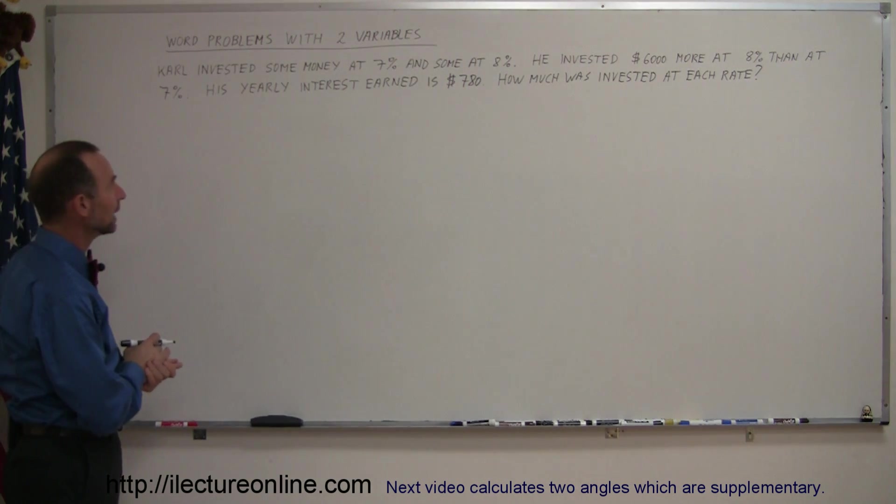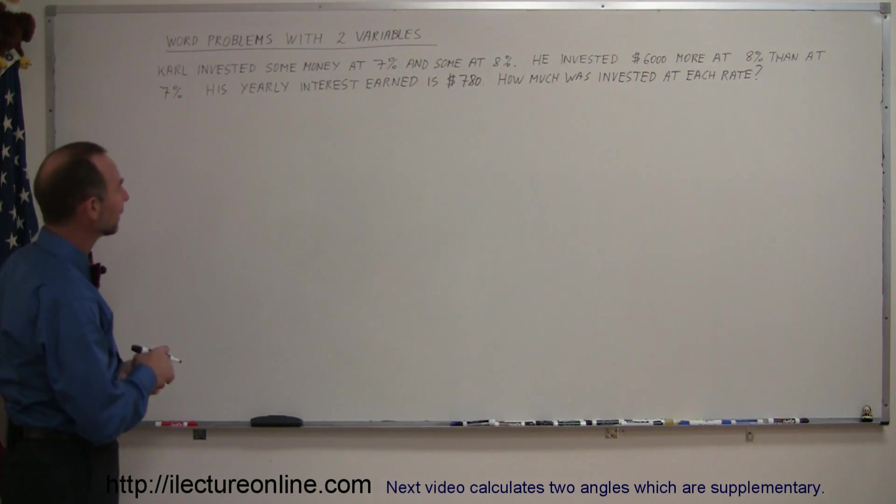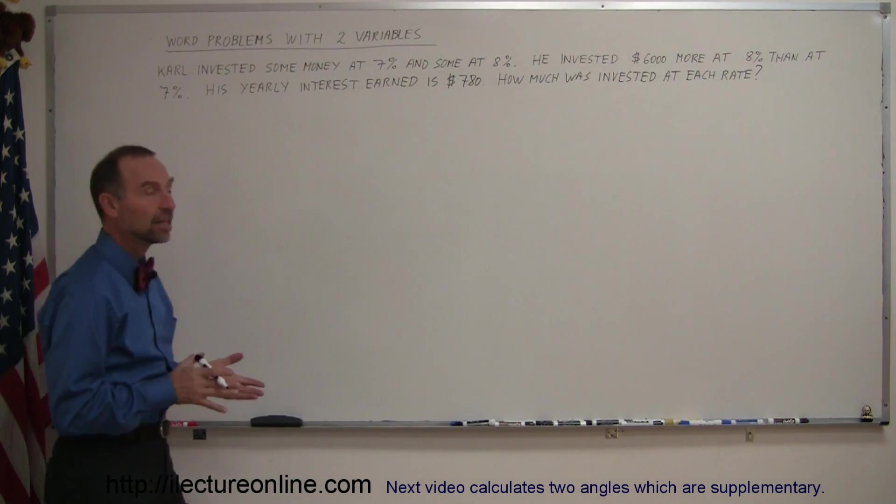Carl invested some money at 7% and some at 8%. He invested $6,000 more at 8% than at 7%. His yearly interest earned is $780. How much was invested at each rate?